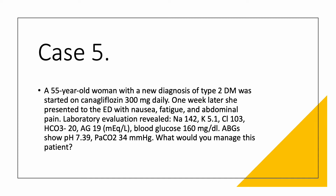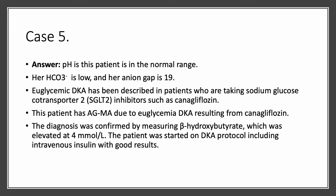pH was 7.39, PaCO2 is 34. How would you manage this patient? This is a case I saw within the past year after usage of canagliflozin and SGLT2 inhibitors became really common. The pH is in the normal range at 7.39, but the bicarb is low and anion gap is 19. So this is what we call euglycemic DKA.